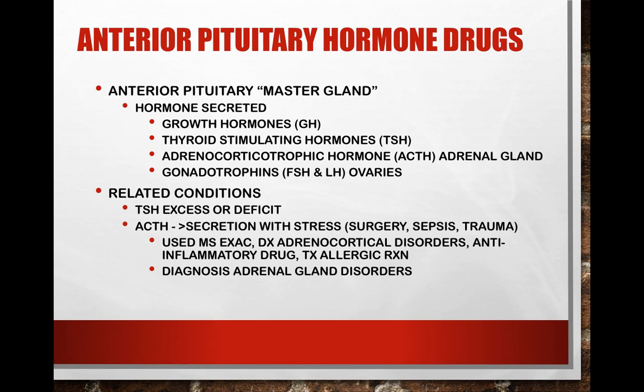Let's start by talking about the anterior pituitary gland. The pituitary gland is considered the master gland of the body. In the anterior lobe, hormones secreted include growth hormones, thyroid stimulating hormone, ACTH (adrenocorticotrophic hormone, which affects the adrenal gland), and the gonadotrophins — FSH (follicle stimulating hormone) and LH (luteinizing hormone), which are stimulated in the ovaries in females.